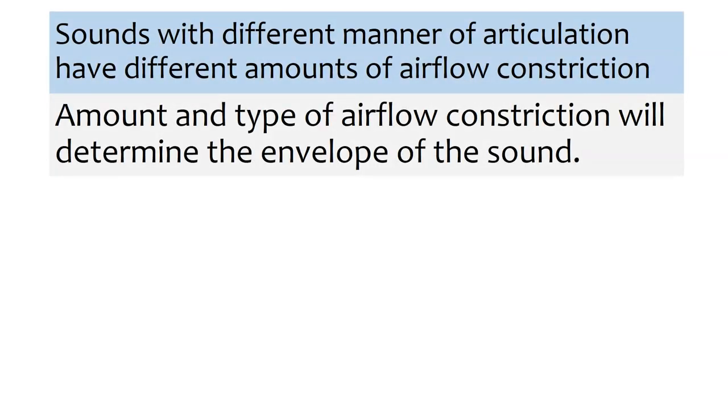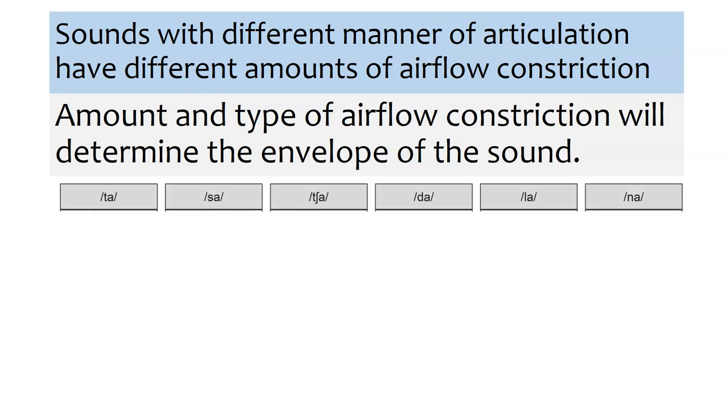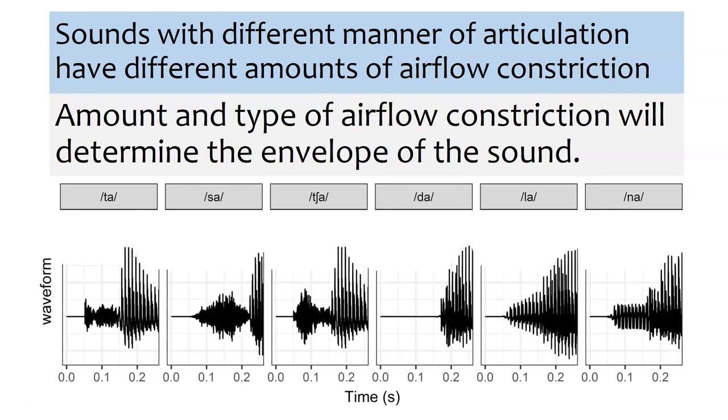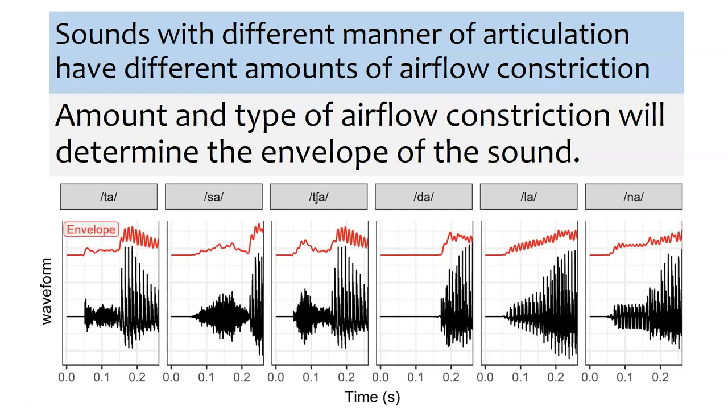So let's dig in a little bit on the use of envelope for manner of articulation. You'll recall that sounds that have a different manner of articulation, what that means is that they have different amounts of constriction of the airflow. And because that airflow constriction determines the envelope or the loudness of the sound over time, we should expect that these sounds, because they have different manners of articulation, they should produce different envelopes. So for ta, sa, cha, da, la, and na, we get distinctly different waveforms that correspond to them. So even though we can't see any of the particular frequencies in this waveform, what we can see if we just outline the shape of them with the envelope is that they all have a very distinct shape. And this is not by accident, so this is actually a systematic change.